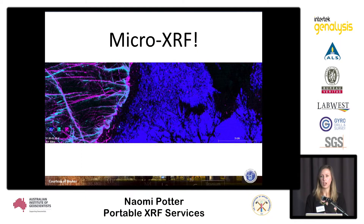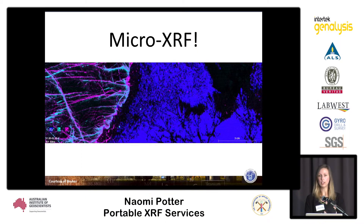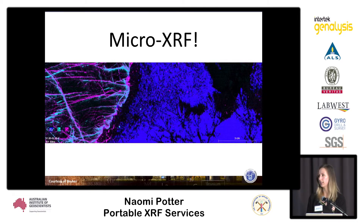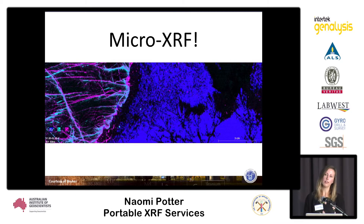This is an example of the type of element distribution maps that can be produced by the micro XRF. This one is an 18 centimeter long piece of core. I highlight it in particular because you can see the calcium and strontium rich veining through the embliganite on the left hand side, and this is invisible in the hand specimen and has been linked to groundwater penetration in the sample.